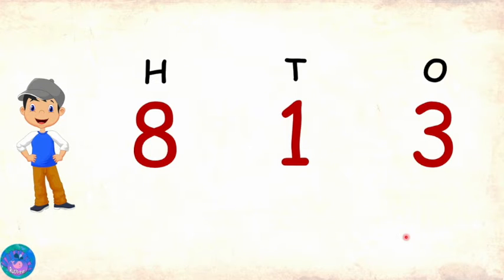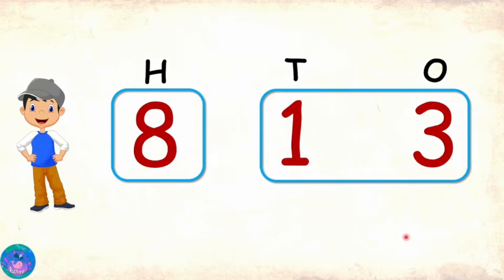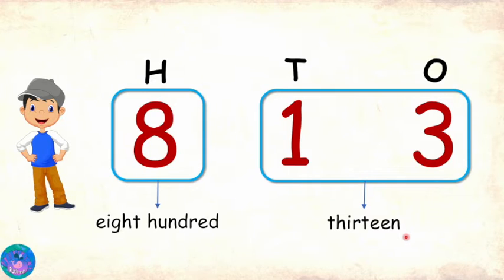And here's one more for you to read. So here are my two parts. First part is 800. Second part is 1 in tens place and 3 in ones place which is 13. So this number is 813. Excellent.